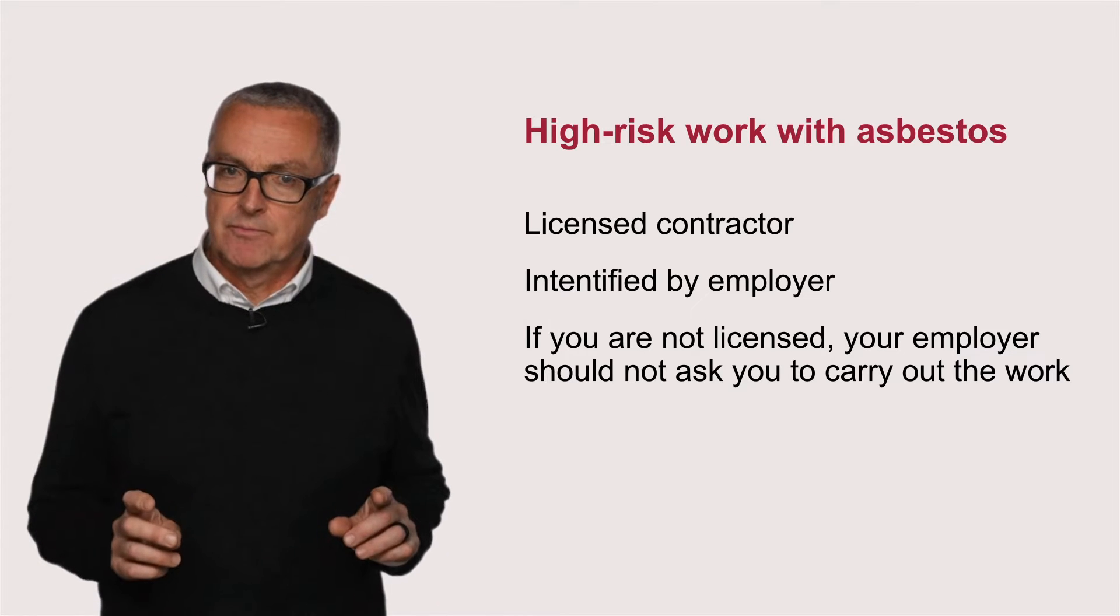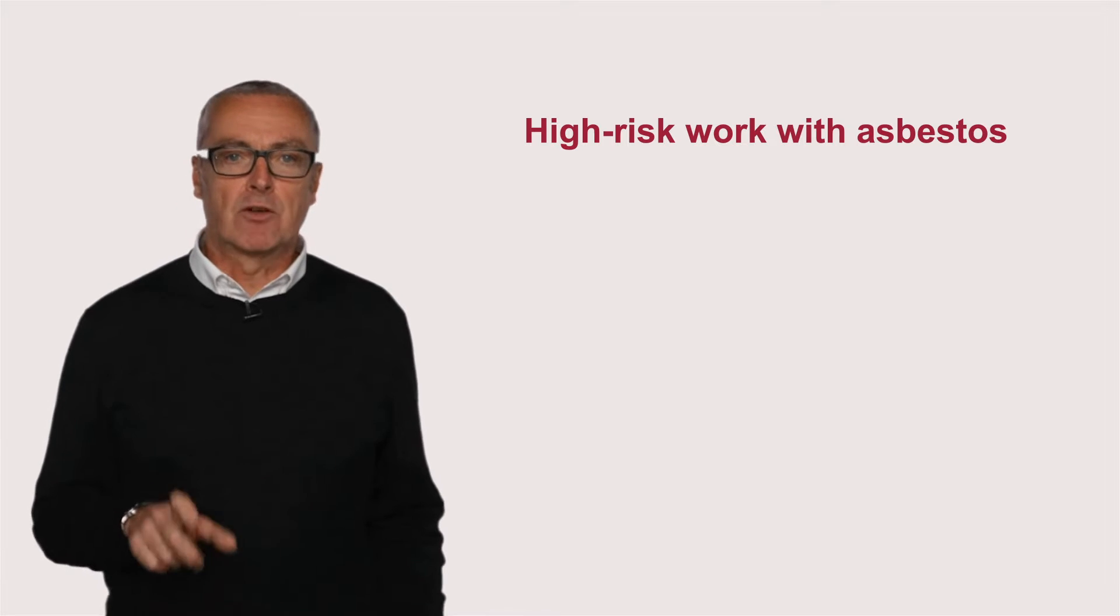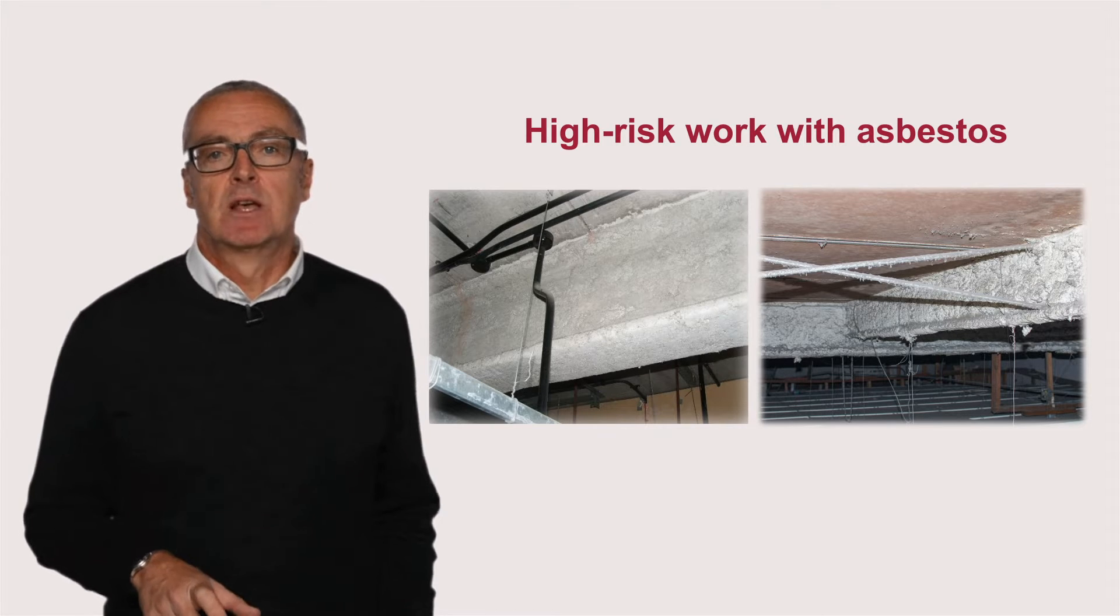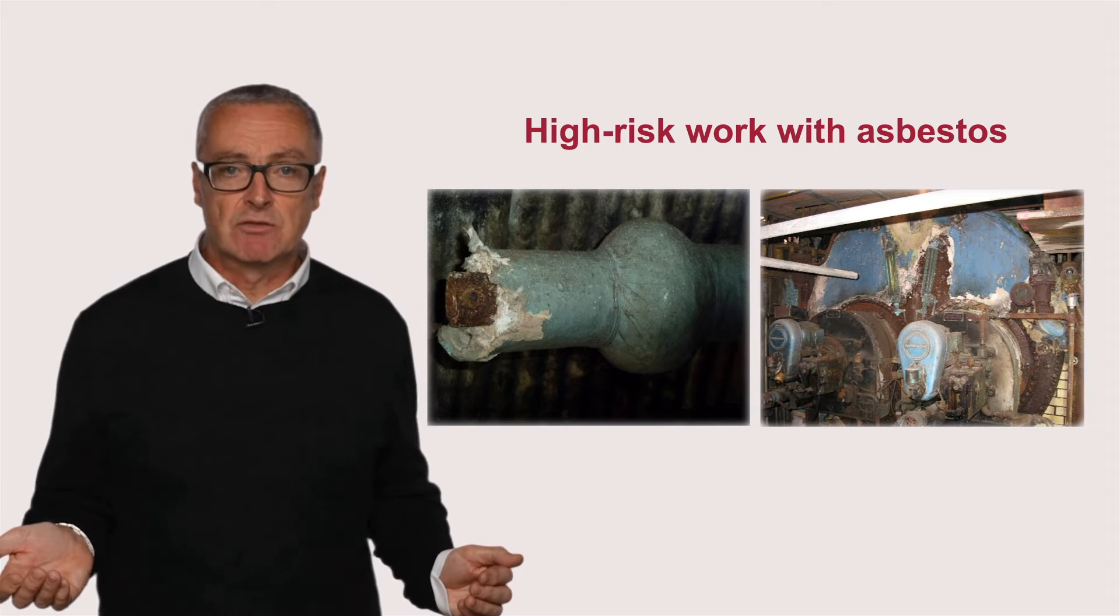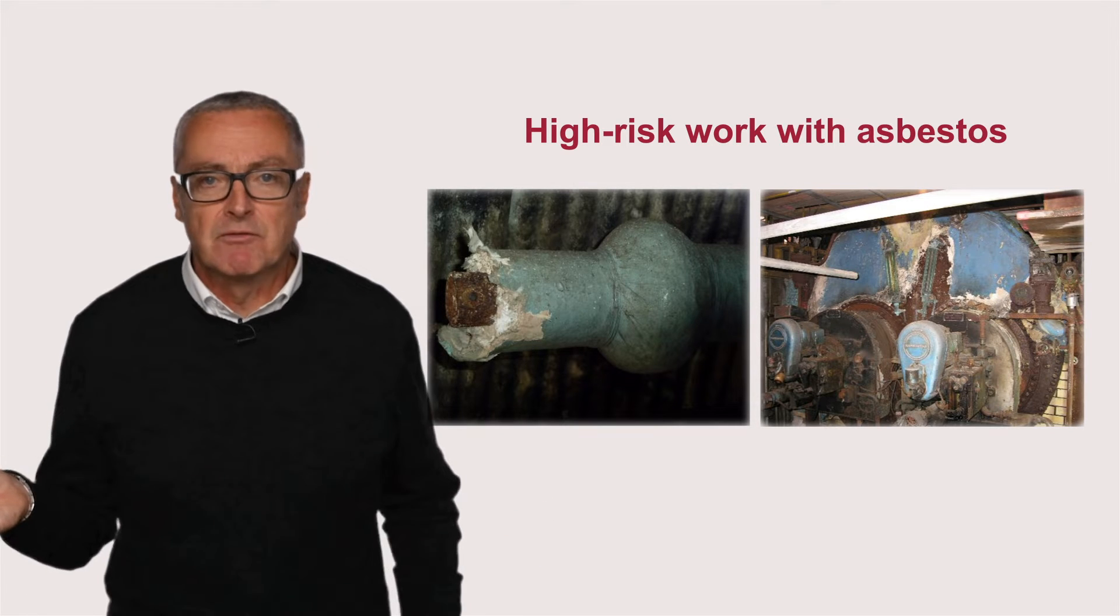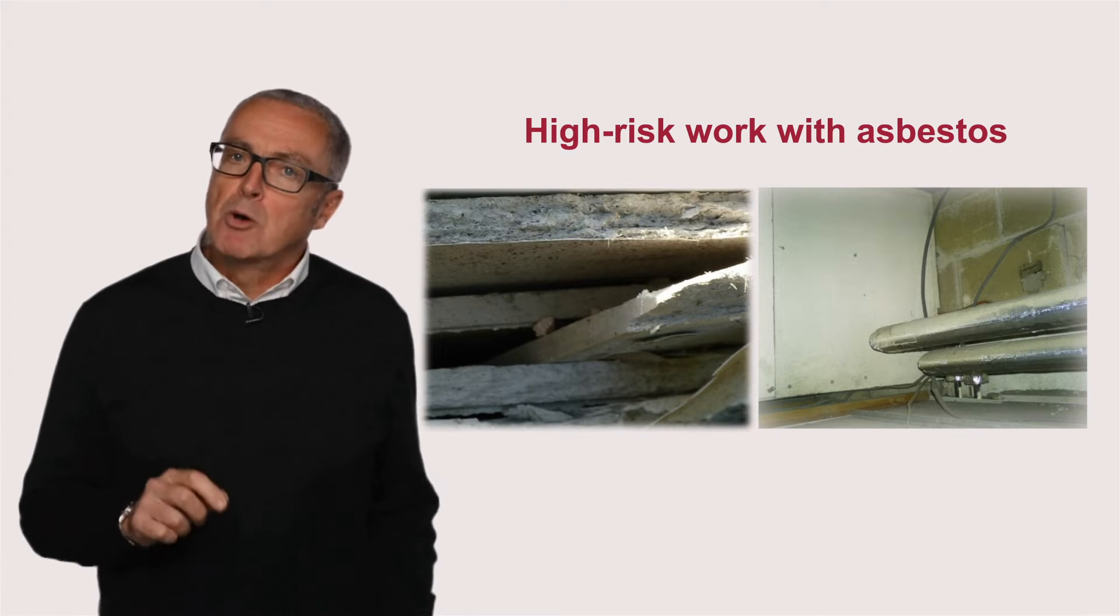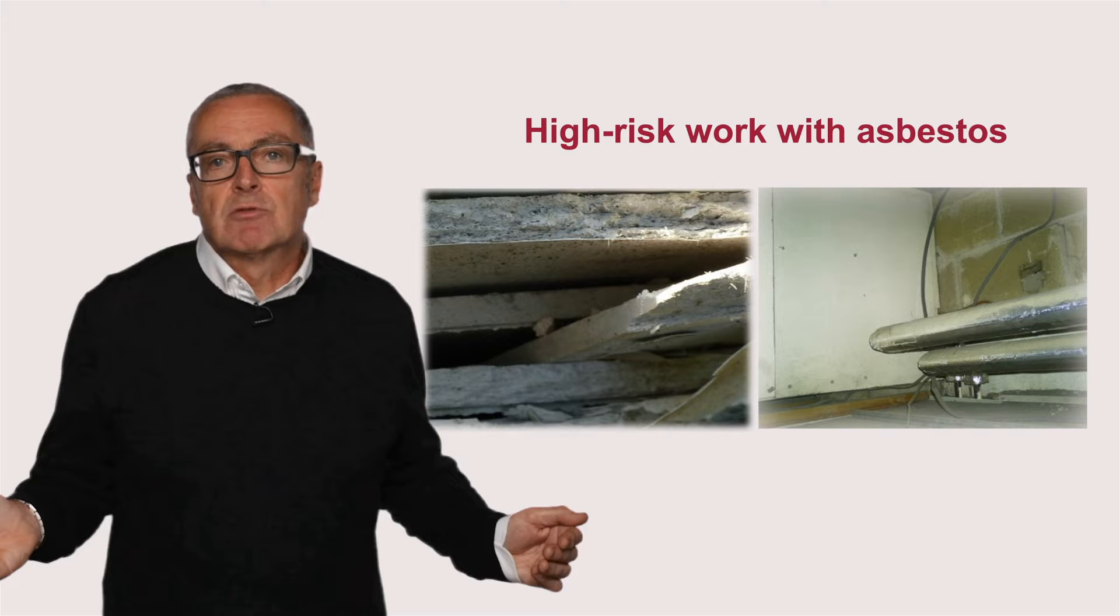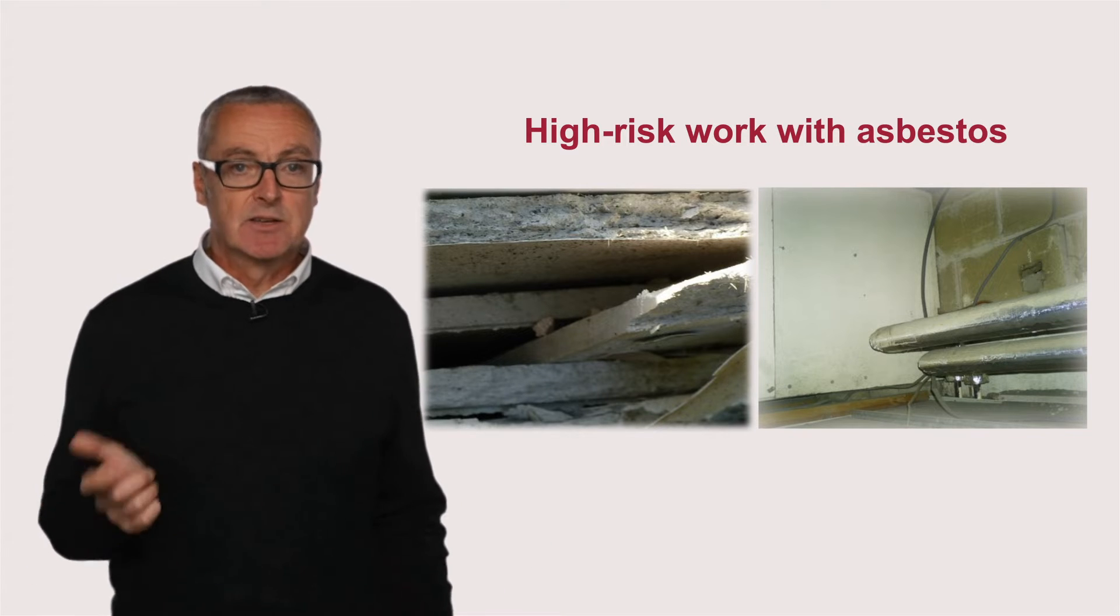For example, only licensed contractors can carry out the following: any work on sprayed asbestos, most repair or any removal of asbestos insulation, for example lagging on pipes and vessels for thermal insulation, most work on asbestos insulating boards such as removal of partition walls, linings, and suspended ceilings.